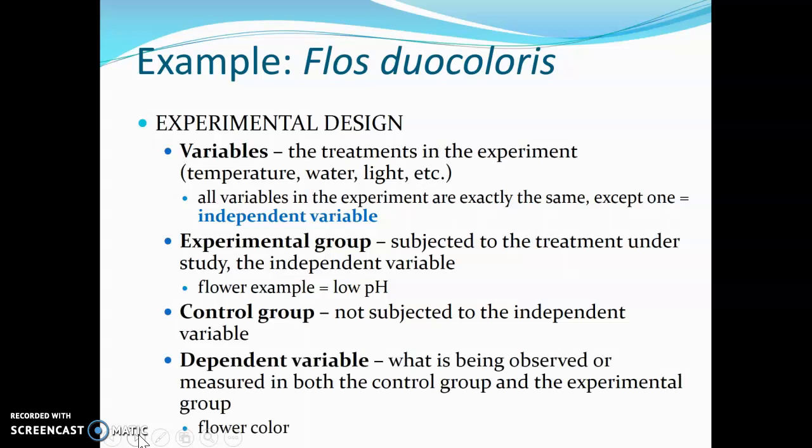Then we have the dependent variable — that's what's being observed or measured in both the control group and the experimental group. So we're going to be looking at flower color in both of our groups, whether they're pink or whether they're blue, and it doesn't matter which group we're looking at, we're going to be looking at that for each.